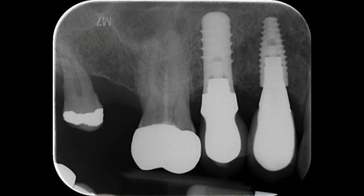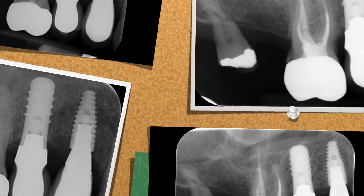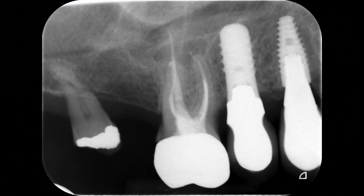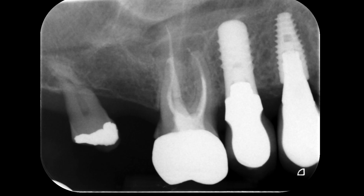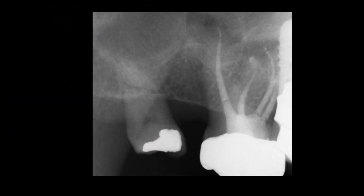Here's the pre-operative radiograph of the maxillary right first molar showing the previous attempt at root canal treatment and the calcified material in the pulp chamber. Here's my standard paralleling view using a RIN holder of the final obturation showing a good coronal-apical seal, and then a distal angled view to separate the MB1 and MB2, which unfortunately are a little bit hidden behind the implant.